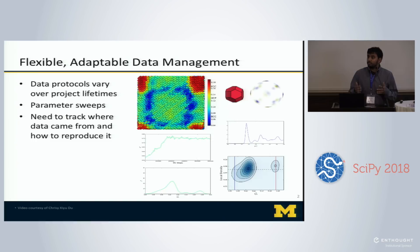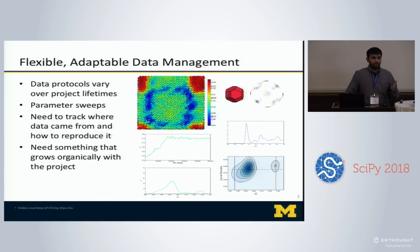The issue we want to make sure doesn't happen is where you generate a bunch of data, then a few months later you come back and you're not sure exactly what parameters you used, what everything's associated with, and it's hard to sort through your data. We want to make sure that this association stays tight and it's easy to organize and access all your data, and critically that your system evolves naturally as your parameter space changes.